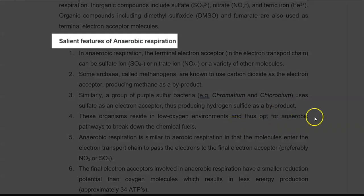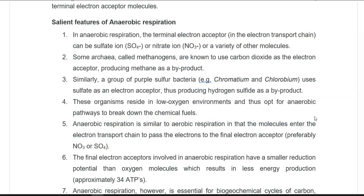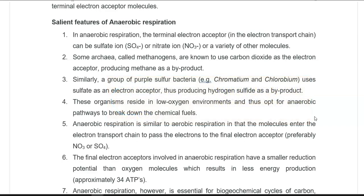The salient features of anaerobic respiration include: the terminal electron acceptor in the electron transport chain is usually sulfate or nitrate rather than oxygen. Some archaea such as methanogens can use carbon dioxide as an electron acceptor, resulting in the production of methane as a byproduct. Similarly, purple sulfur bacteria such as Chromatium and Chlorobium use sulfate as an electron acceptor, producing hydrogen sulfide as a byproduct. These organisms reside in low-oxygen environments and opt for anaerobic pathways to break down available substrates.